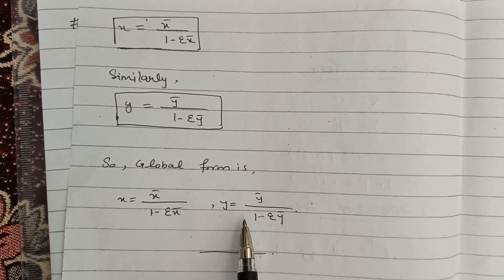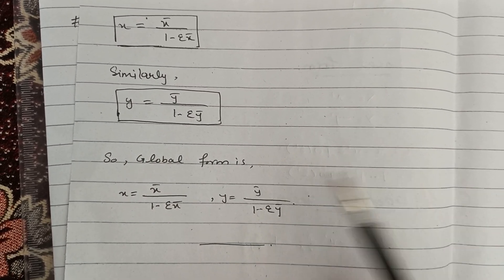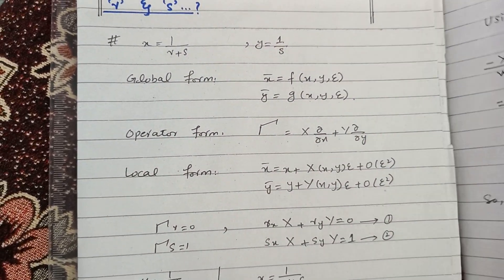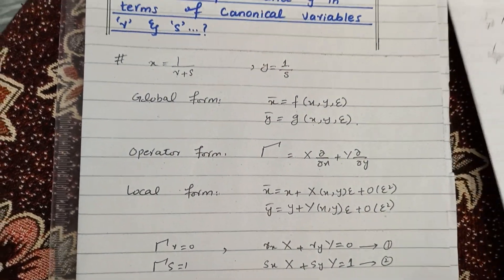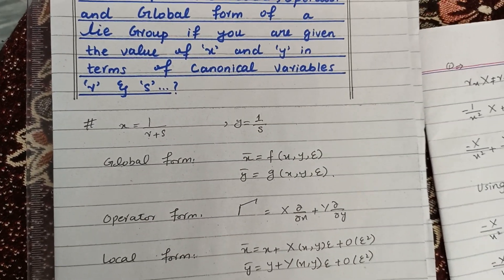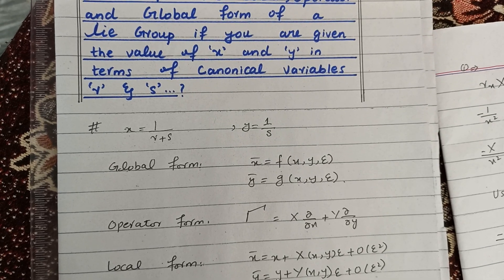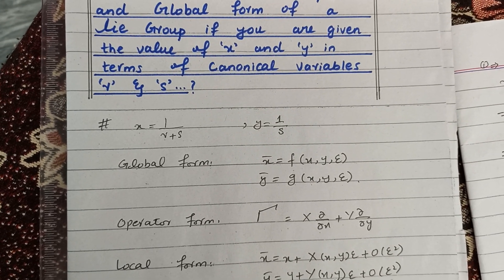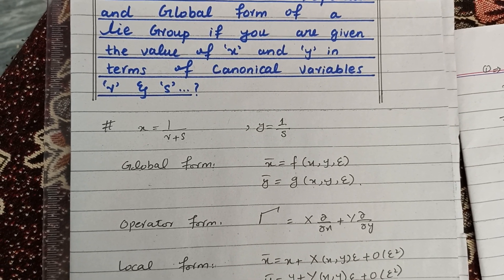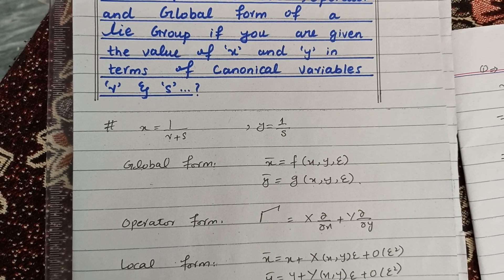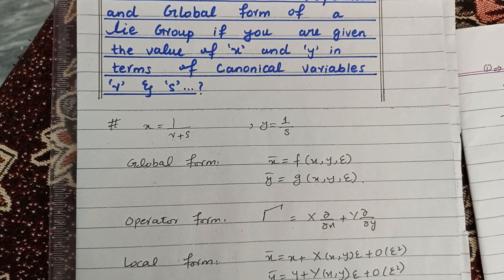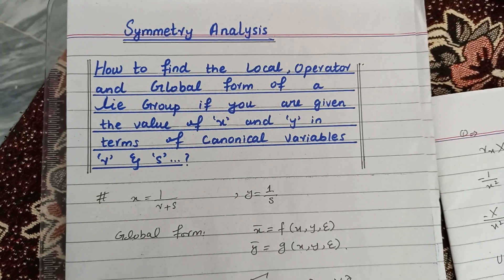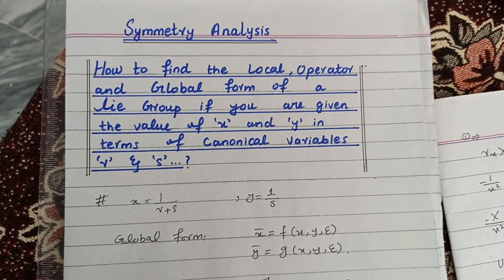This is the global form of the Lie group. In today's lecture we discussed a problem where we are given x and y in canonical variables and found their corresponding Lie groups in local, operator, and global forms. This is all about this lecture — thank you so much.